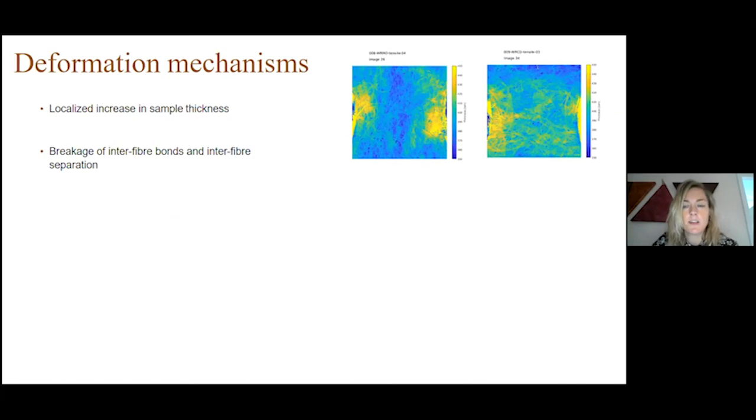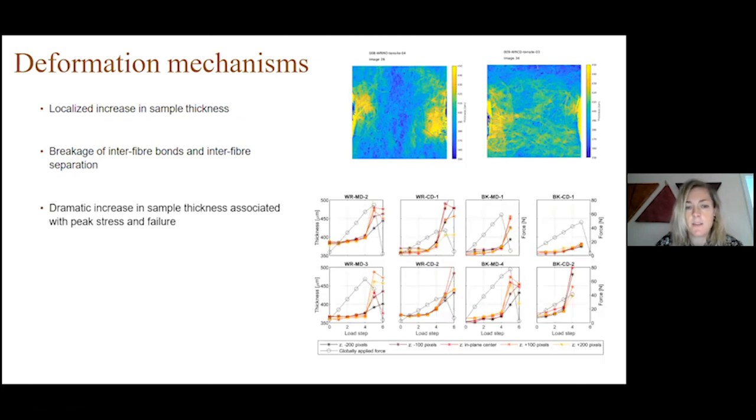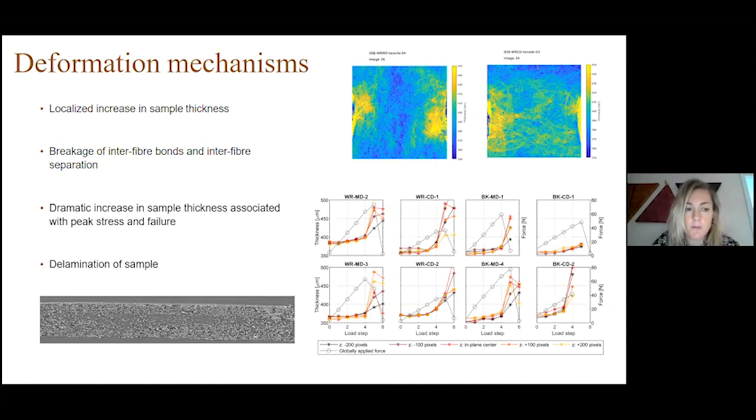We have seen that there is a localized increase in sample thickness before the sample fails. It is believed that the breakage of inter-fiber bonds and inter-fiber separations leads to the increase in sample thickness. At peak stress and after failure, we see a dramatic increase in the sample thickness which could be quantified with the methods we have used here. This process is referred to as delamination of the sample, which means that different layers within the paperboard in the out-of-plane direction are separated from each other.